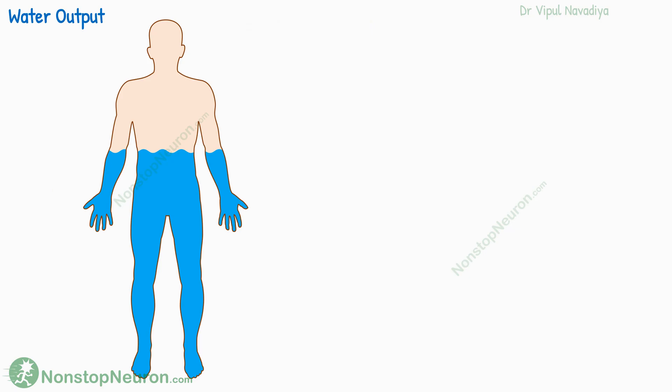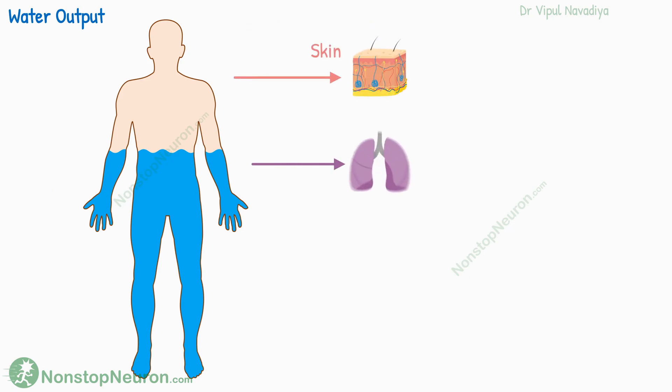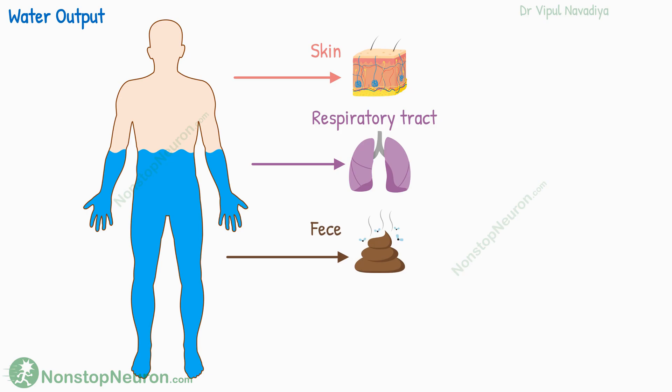There are four routes of water output: skin, respiratory tract, feces, and urine.